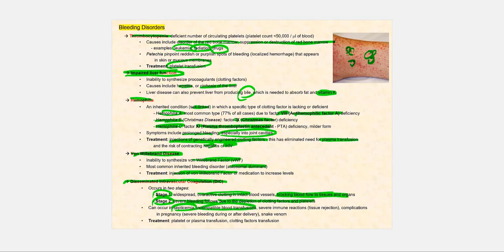Incompatible blood transfusions, severe immune reactions, such as tissue or organ rejection, can also occur in complications in pregnancy. For example, severe bleeding during or after delivery, as well as certain snake venoms can cause DIC. Treatment will involve platelet or plasma transfusion and clotting factor transfusion.